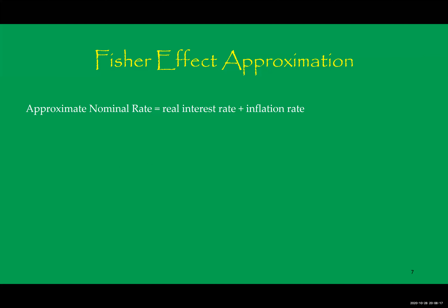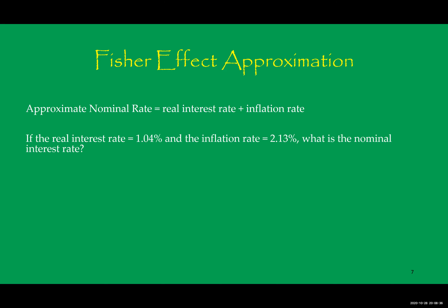In some situations, it may be appropriate to approximate the nominal rate of interest instead of calculating it exactly. To approximate the nominal rate of interest, it's very simple — just take the real interest rate and add the inflation rate. Using the previous example, the real interest rate is 1.04% and the inflation rate is 2.13%. Plugging these into the approximation equation: 0.0104 plus 0.0213 equals 3.17%. That's the approximate nominal rate for this example.